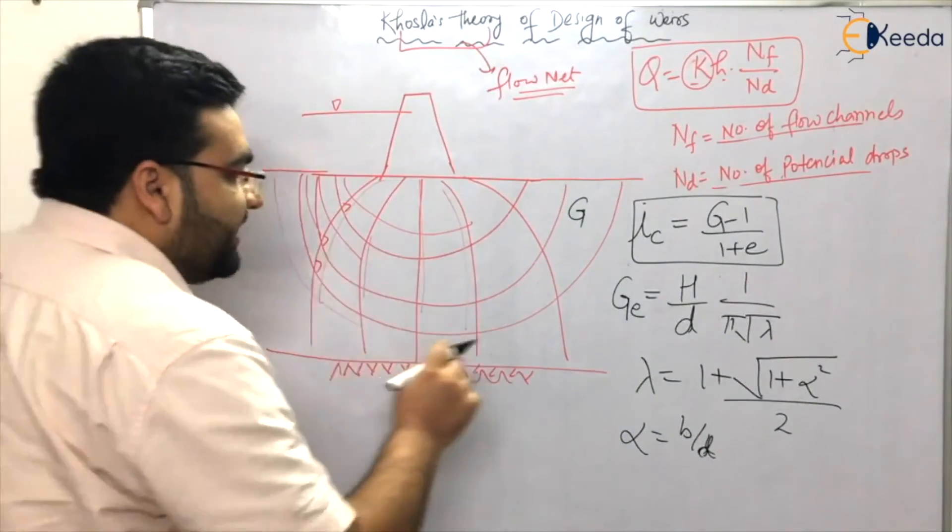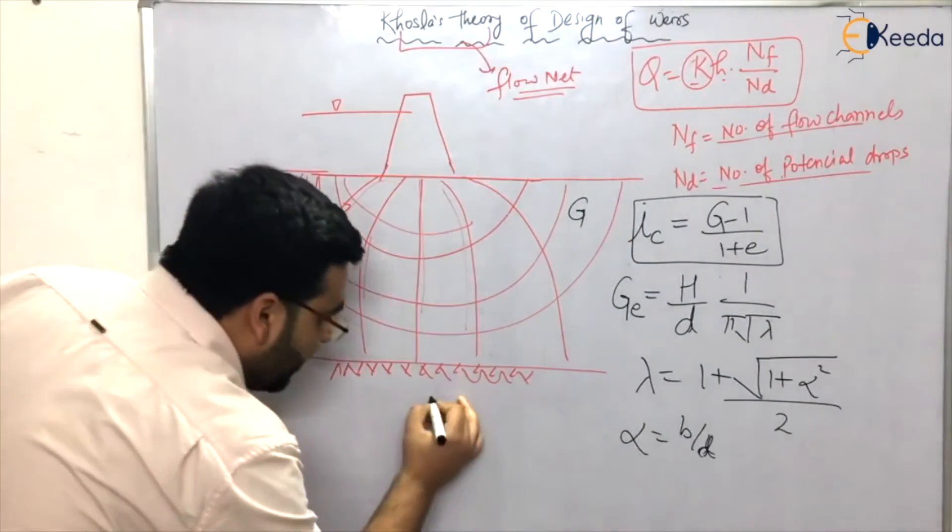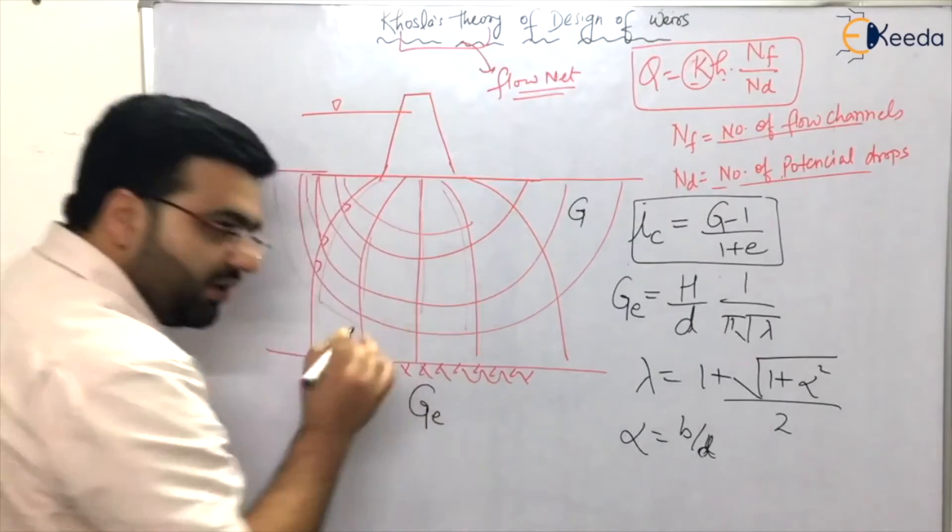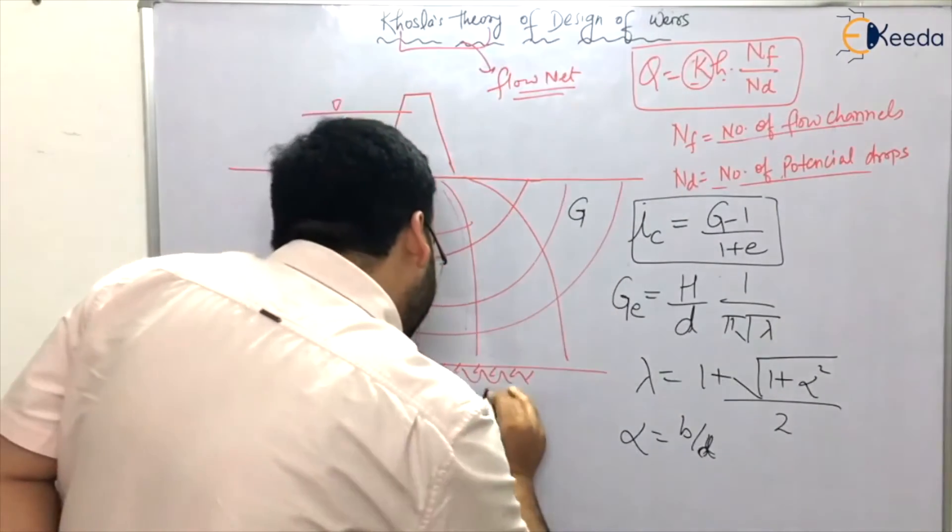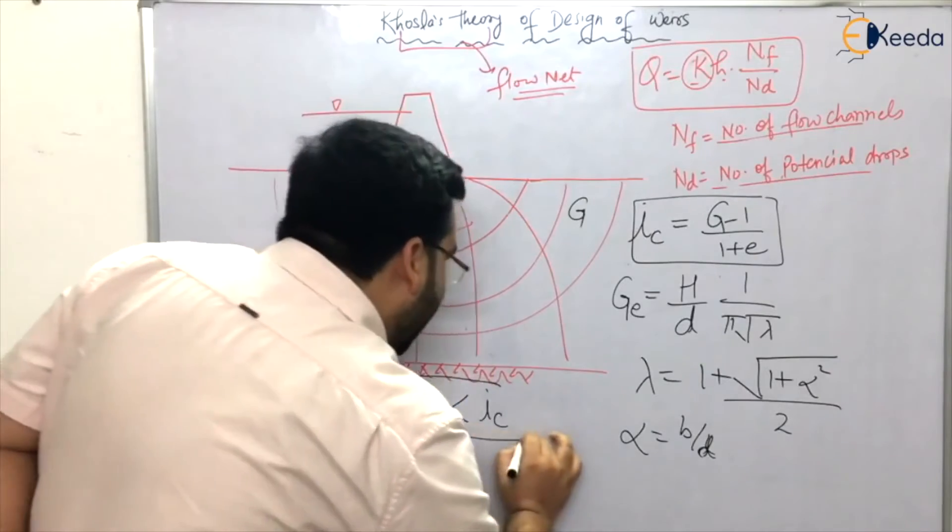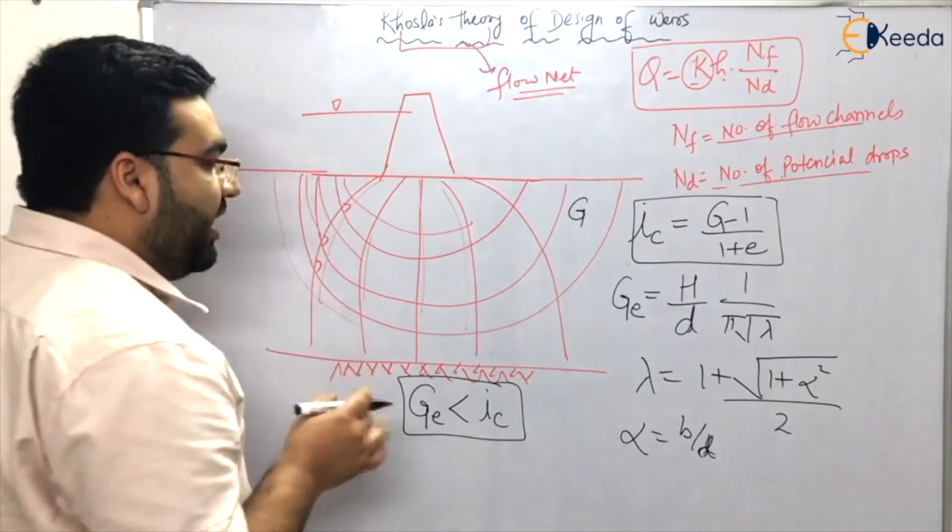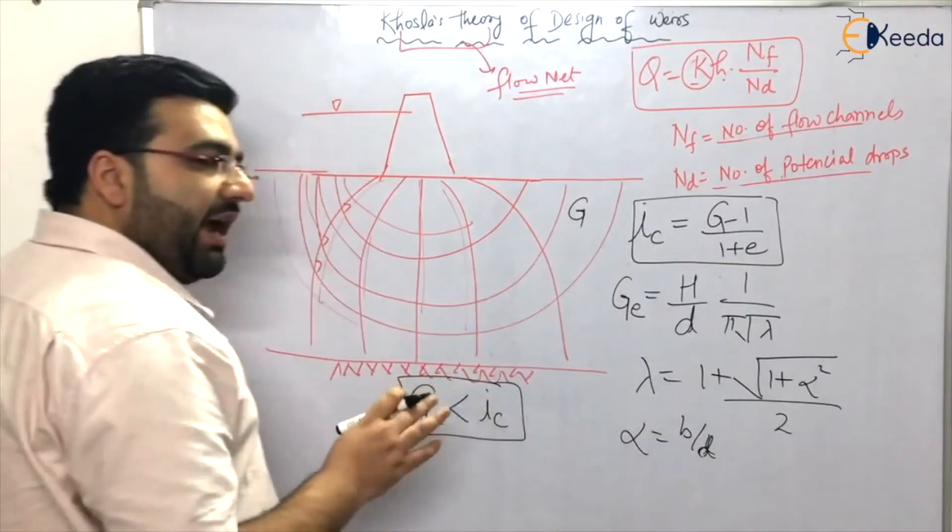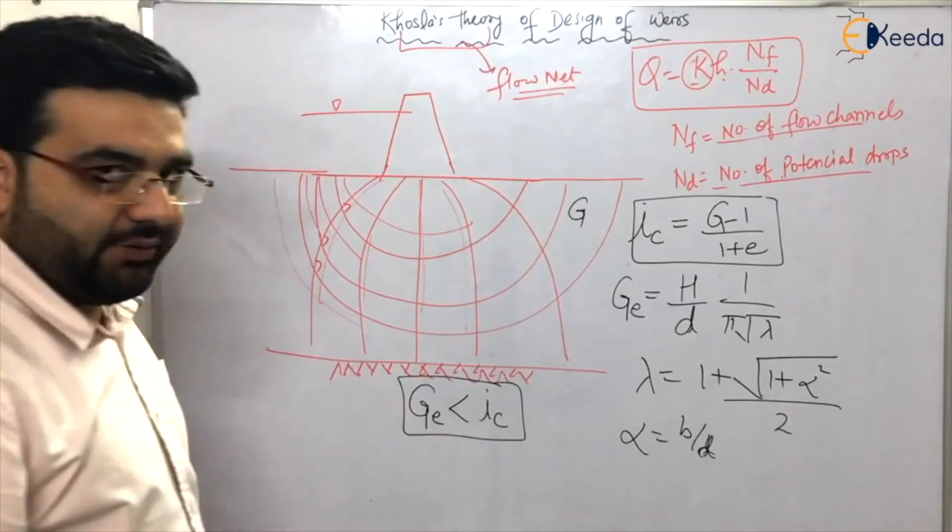One more thing: to stop the piping failure, GE should always be less than ic. If the exit gradient is very high, there will be piping failure. So exit gradient should be small as compared to the critical gradient.